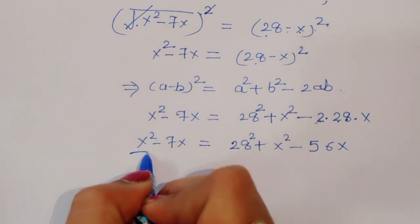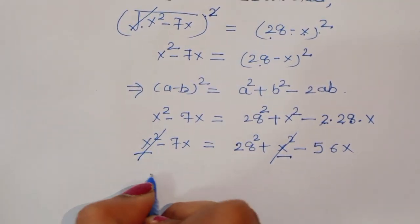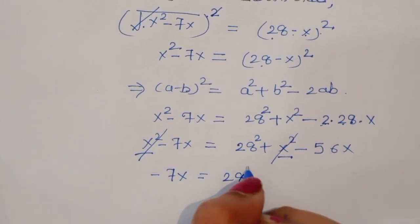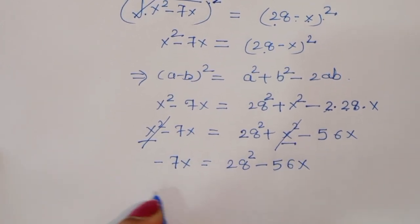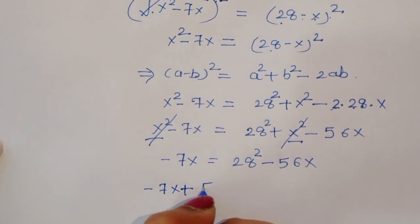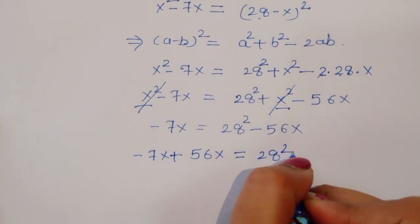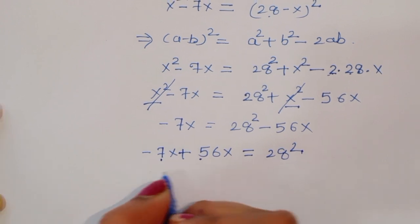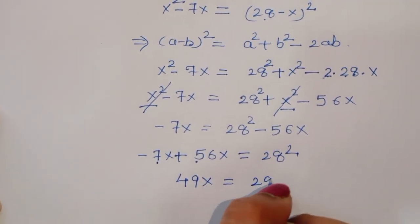You can see here x squared appears on both sides, so we can cancel this term. Now minus 7x is equal to 28 squared minus 56x. Rearranging: minus 7x plus 56x is equal to 28 squared, which gives us 49x is equal to 28 squared.